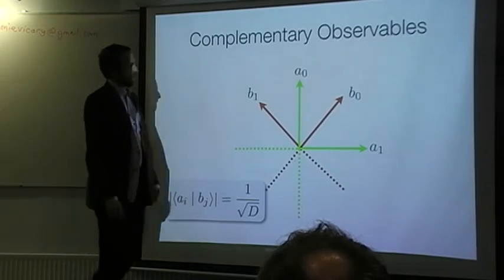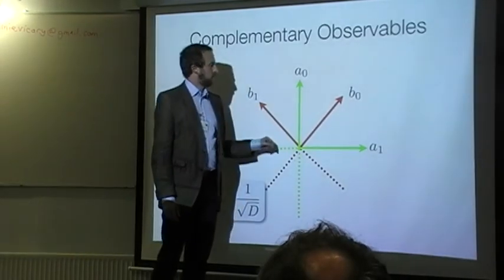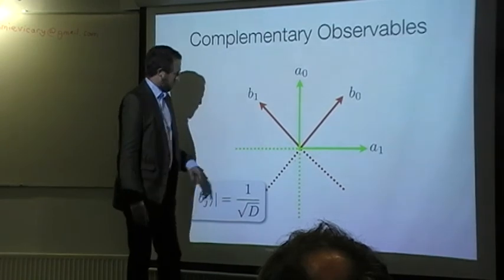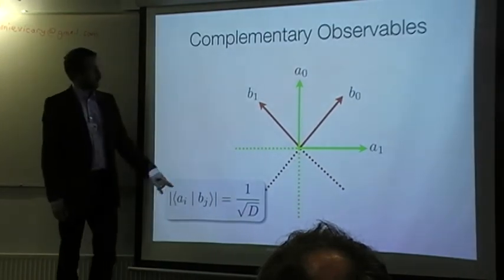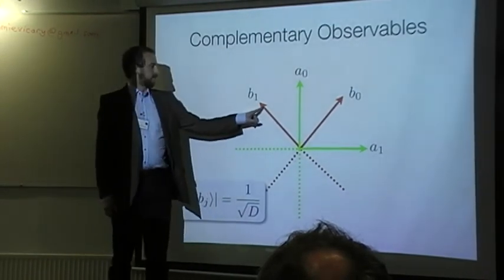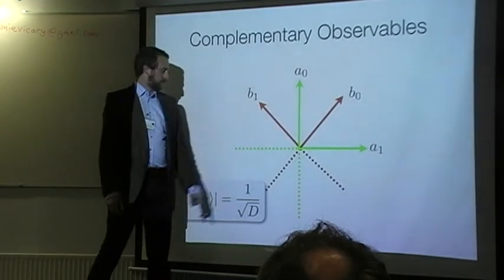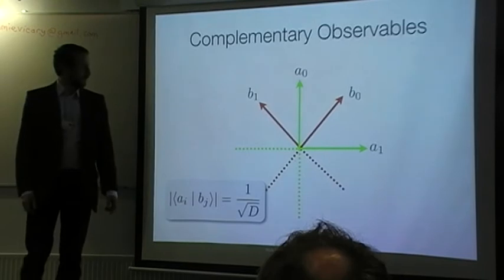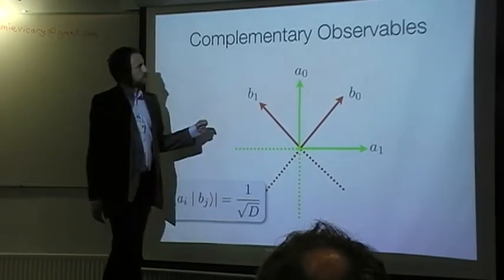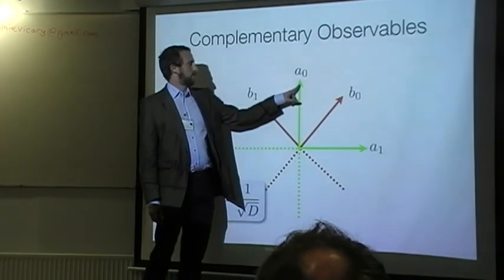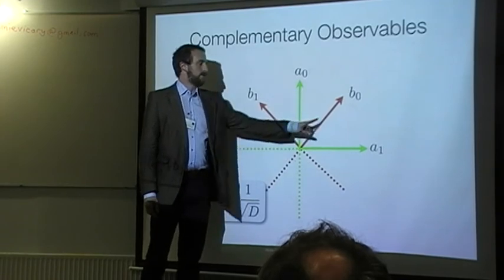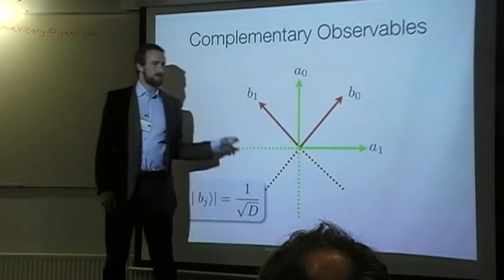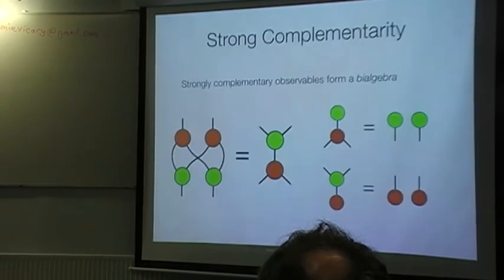Basically, the notion of complementarity. So, briefly speaking, two observables, two bases, are complementary if the inner product between every element of red and every element of green is equal. And, in fact, the scalar is one over the square root of the dimension. More operationally, this says, if I know perfectly A, I know nothing about B. Because all the outcomes are equiprobable from my initial state.